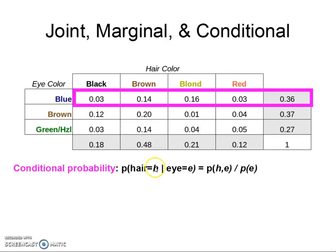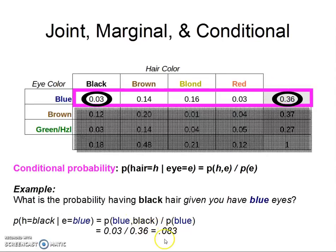Let's say the probability that the hair color is black, given that the eyes are blue, is equal to the probability of black hair and blue eyes, this right here, divided by the probability of blue eyes. Out of all the people who have blue eyes, how many of them also have black hair? So we take this guy and we put it over this guy. And so this gives us 8.3%.